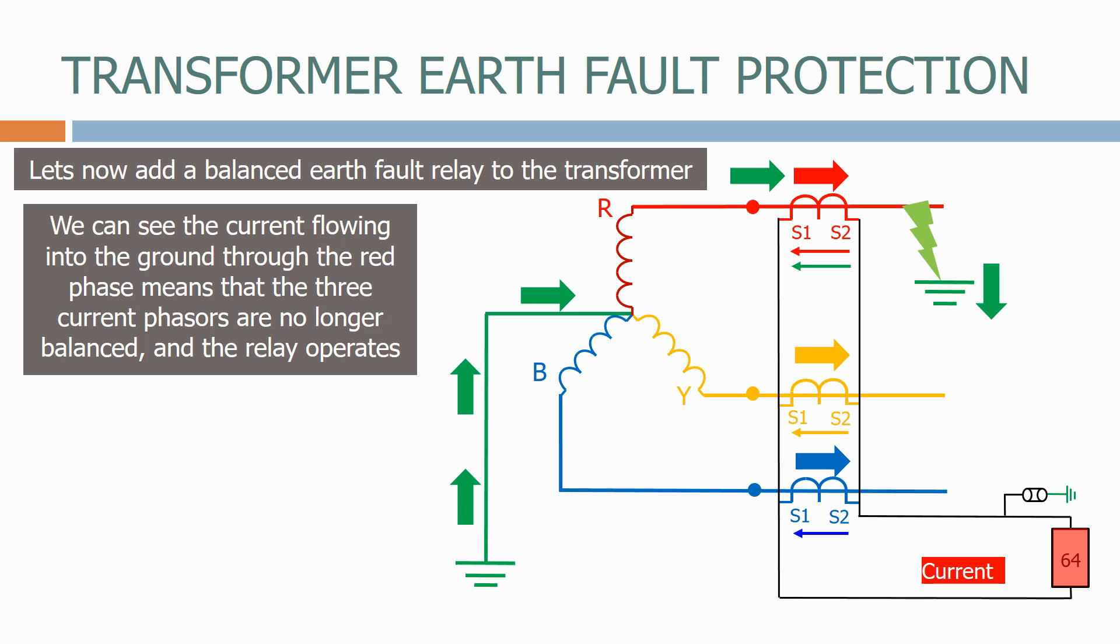We can see the current flowing into the ground through the red phase means that the three current phases are no longer balanced, and the relay operates.